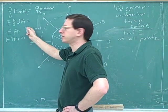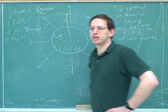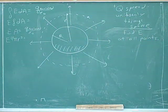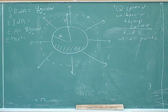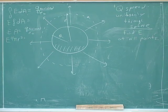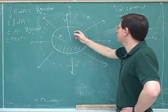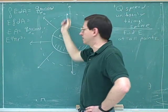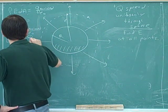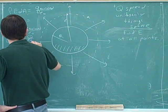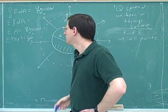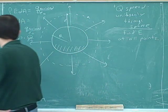What should our Q-enclosed be? Q-enclosed is just the total charge Q, because this entire charge Q is enclosed inside the Gaussian surface. So we get this formula — let's solve it for E.